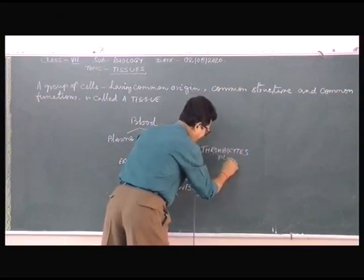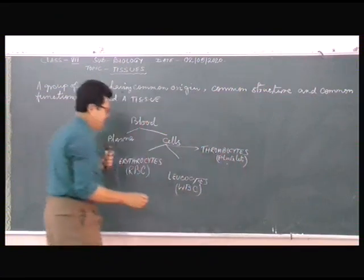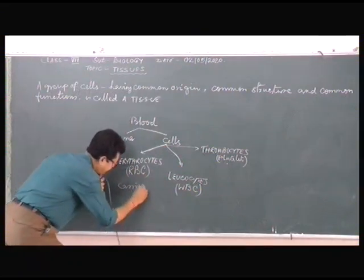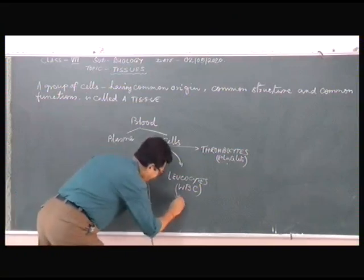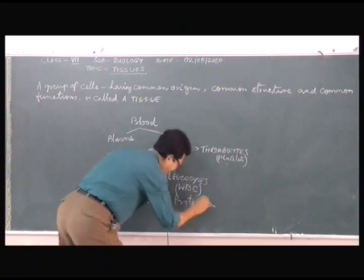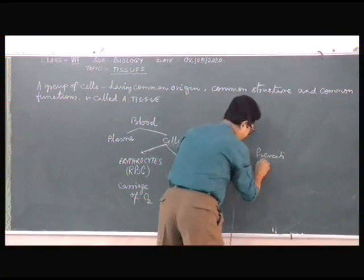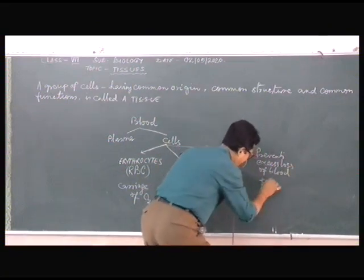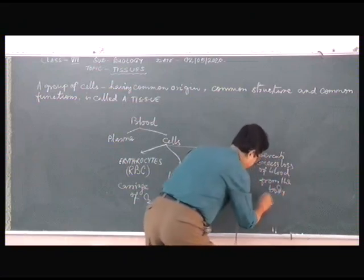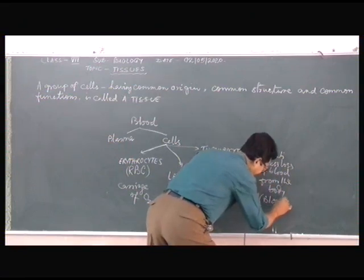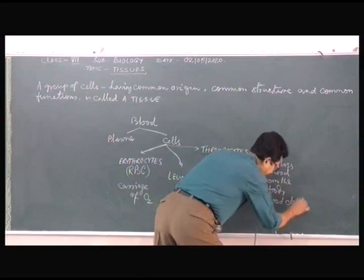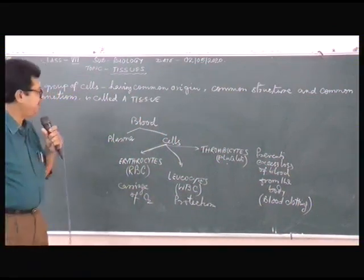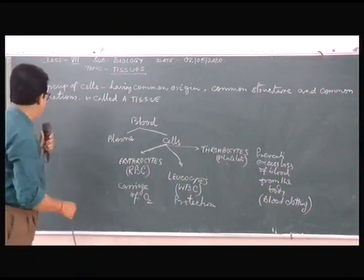Thrombocytes are commonly called platelets. As individual cells, they have different functions. Erythrocytes carry oxygen. Leukocytes provide protection. Thrombocytes prevent excess loss of blood from the body — simply we call it blood clotting. But these are not the functions of the tissue as a unit; these are individual cell functions.